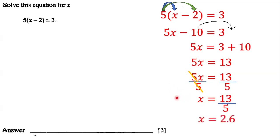Thirteen divided by five is 2.6, so the answer to this linear equation is x equals 2.6.